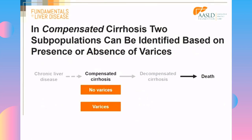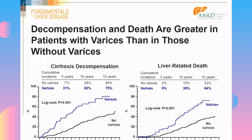Even within the compensated patient, there are two subpopulations with prognostic significance: patients with no varices versus patients who have varices that have never bled. The one-year mortality for patients without varices is minimal at 1%, whereas patients with varices have a mortality of 3% — still very low, but higher. Patients without varices have a lower risk of decompensation and liver-related death, whereas patients with varices are already a little sicker while still being compensated.